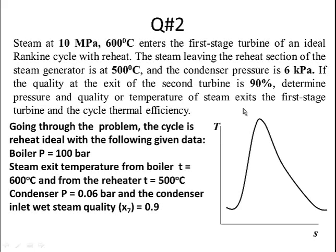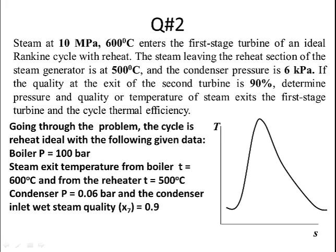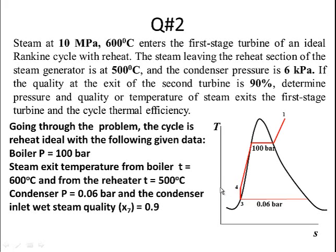Based on the information given, we draw the temperature-entropy (T-S) diagram to help control the problem. The condenser pressure is 0.06 bar or 6 kilopascal, so we draw a line to represent the boiler pressure. Steam leaves the condenser as saturated liquid, so we can draw the pump process. With boiler and condenser pressures known, states 3 and 4 can be easily identified. We can also identify state 1, the exit from the boiler, since pressure is 100 bar and temperature is 600°C.